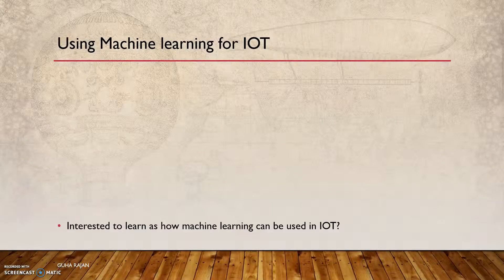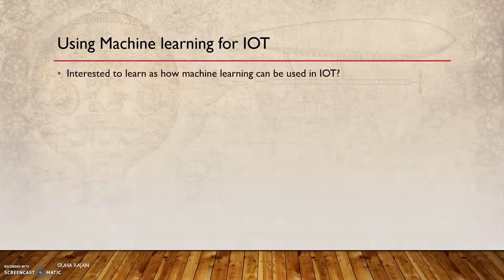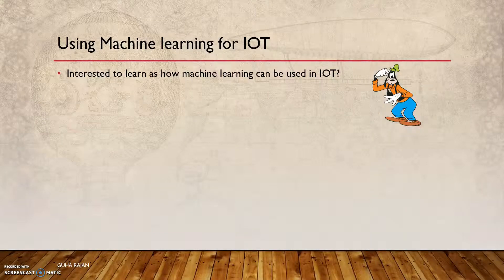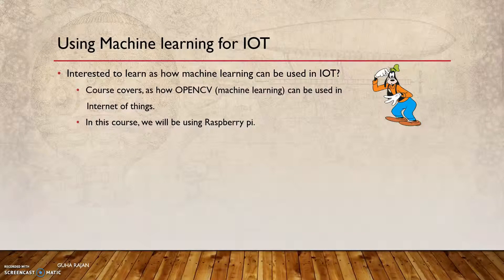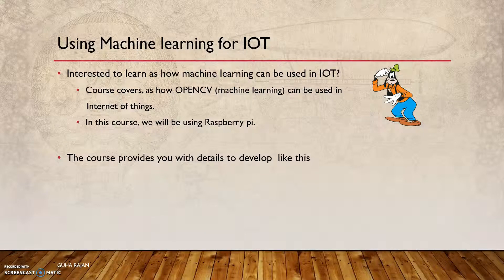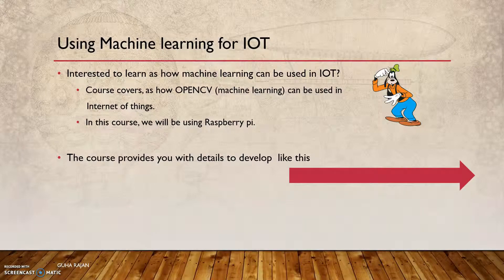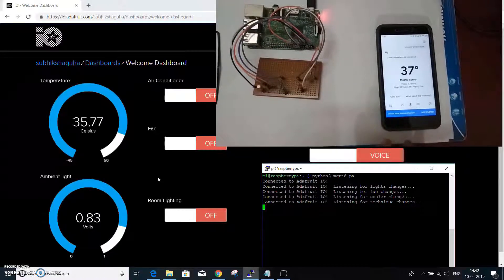Welcome to the course. Are you interested to learn how machine learning can be used in IoT? This course covers how OpenCV can be used in Internet of Things. The course will use Raspberry Pi — we will be installing OpenCV on Raspberry Pi so that it can be used in IoT applications. Furthermore, this course provides you with details to develop voice control automation.